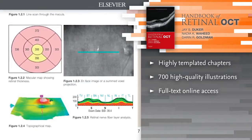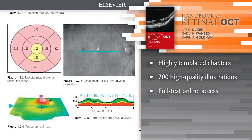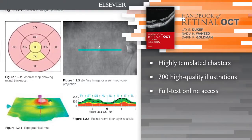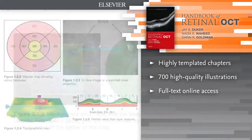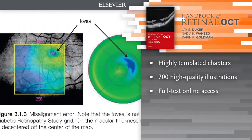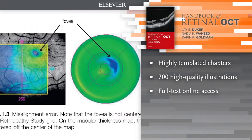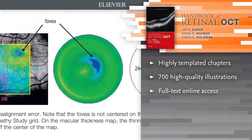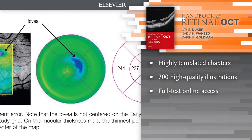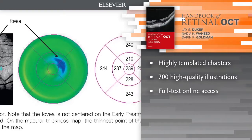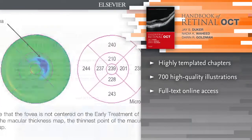See how the full spectrum of diseases present through approximately 700 illustrations, including the highest quality spectral domain OCT images available.